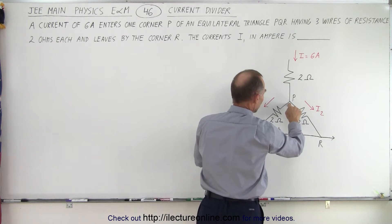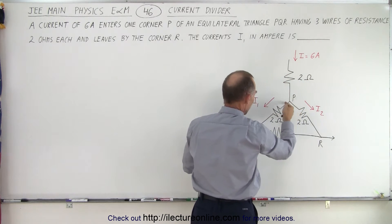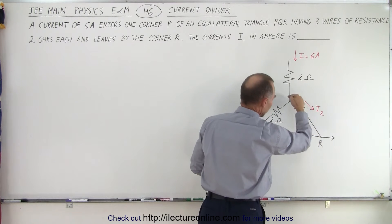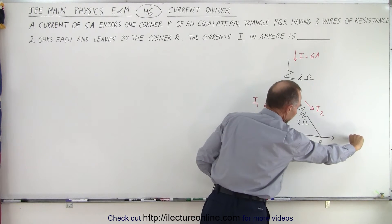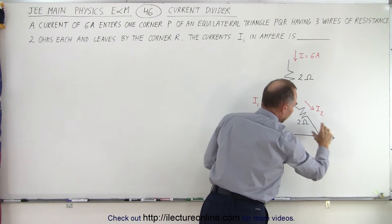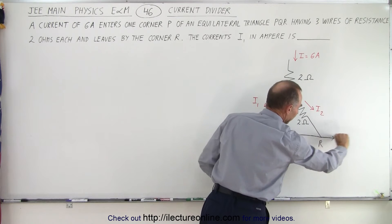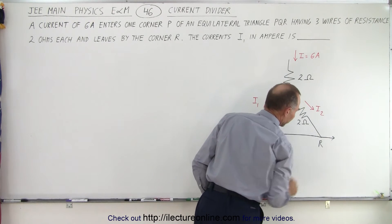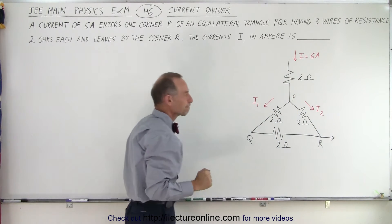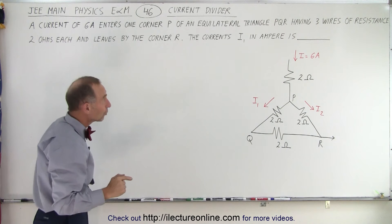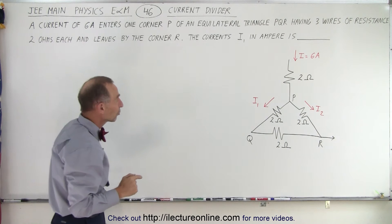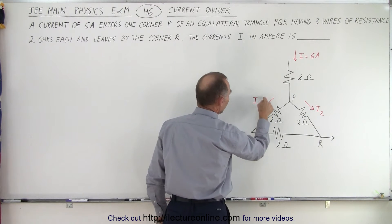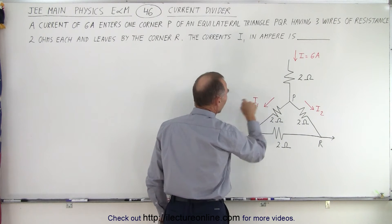It splits up at the junction here — one part goes in this direction, the other part goes in this direction, and then it comes out of here. They recombine, it comes out of here, so it's 6 amps of current going this way. What they want to know is what is the current in this branch, called I1.